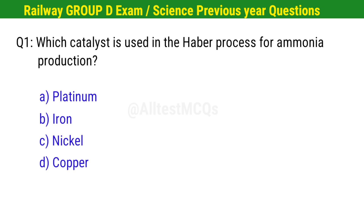Question No. 1. Which catalyst is used in the Haber process for ammonia production? Correct option is B. Iron.